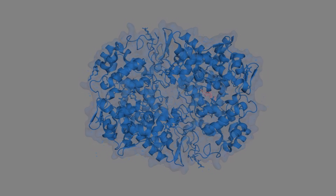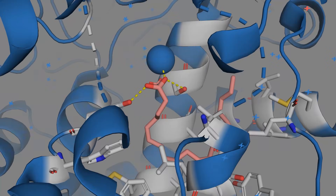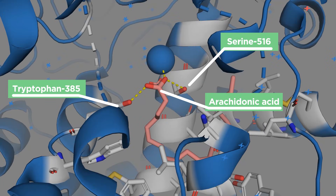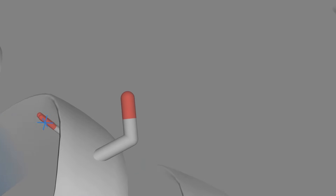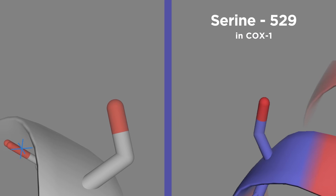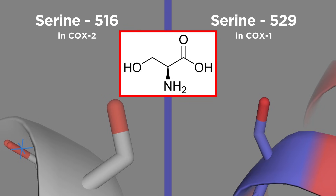Aspirin, however, transfers its acetyl group to one of the amino acid residues in the active site of the enzyme. To be specific, aspirin acetylates serine-529 in COX-1 and serine-516 in COX-2. These are homologous serine residues, meaning that they are in the same relative position in the active site and perform the same function, with the discrepancy in number being due to the fact that the amino acid sequence of these two enzymes is slightly different.